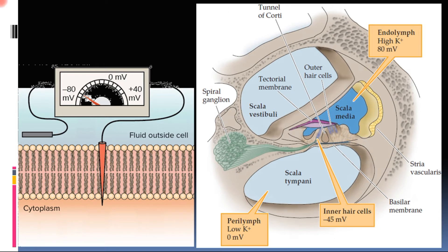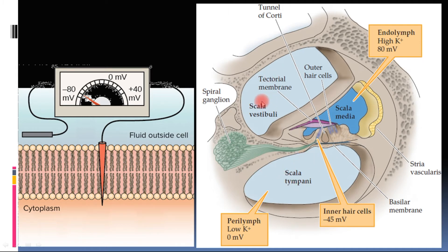Because the endolymph has a high potassium concentration — potassium being a positive ion — compared to the low potassium in perilymph, a potential of plus 80 millivolts develops across the membrane, with positivity on the scala media side. This potential, arising from the difference in potassium concentration between endolymph and perilymph, is called the endocochlear potential.